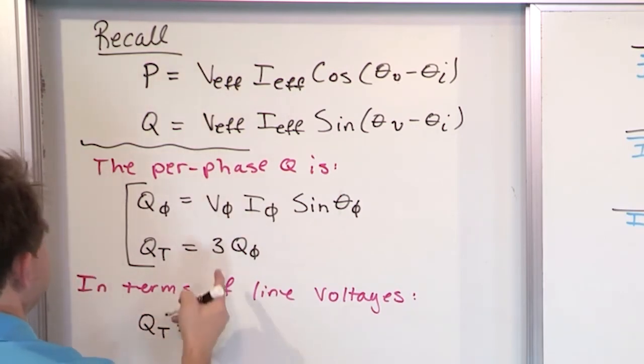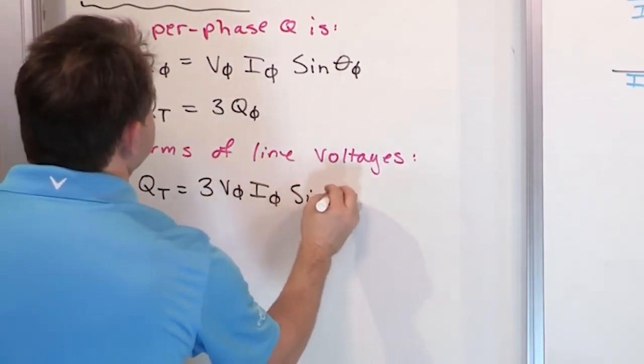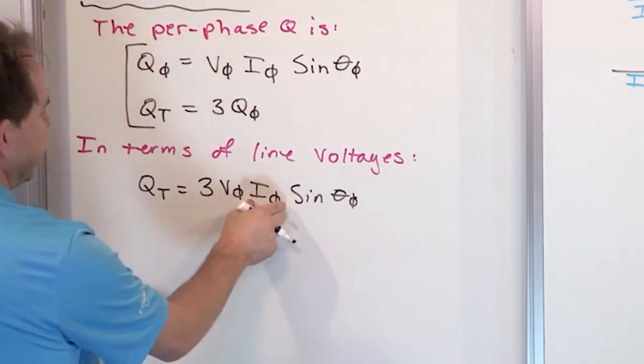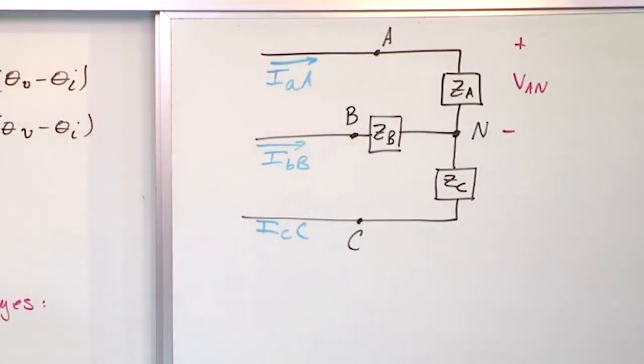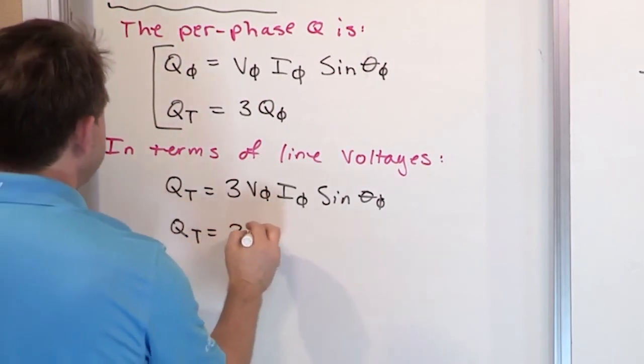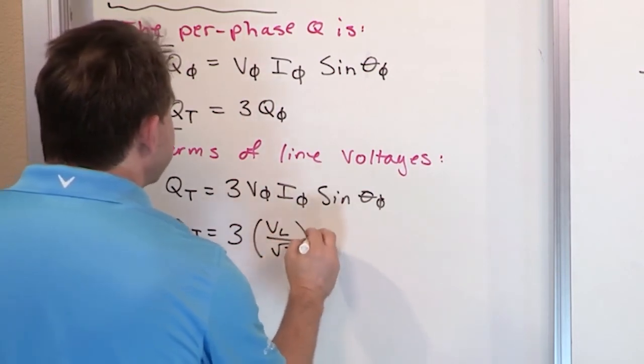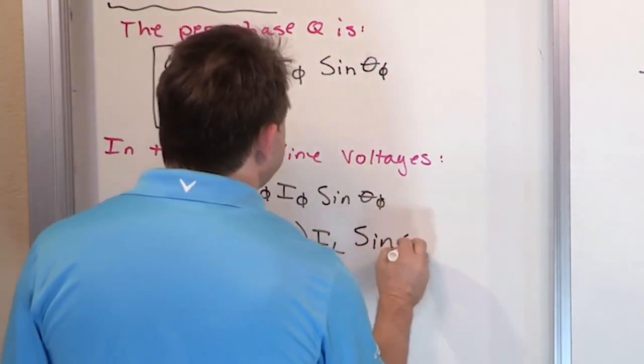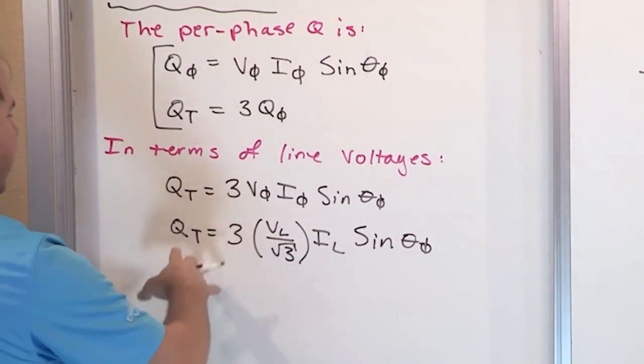So we're going to say QT, three times this, so it's going to be three V phi, I phi, sine of theta phi. Okay, that's just three times that. Now, remember, the phase current and the line current are exactly the same. Phase current and line current are exactly the same. But the voltage is different. And we've gone through this in the last section, so what you're going to have here, just so we don't regurgitate the same things over and over again, you're going to have three, open up our parentheses, you're going to have VL, the line voltage, divide by the square root of three. Then IL is exactly the same as I phase, so we're going to leave it there, sine of theta phi. And then we can do the same getting rid of the square root here, multiply by square root of three over three, simple.